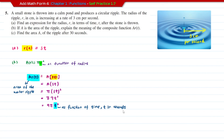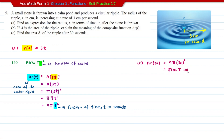For part c, find the area after 30 seconds using A∘r(t) = 9πt². Substitute t = 30: A = 9π(30²) = 9π × 900 = 8100π cm². That is the area of the water ripple after 30 seconds.